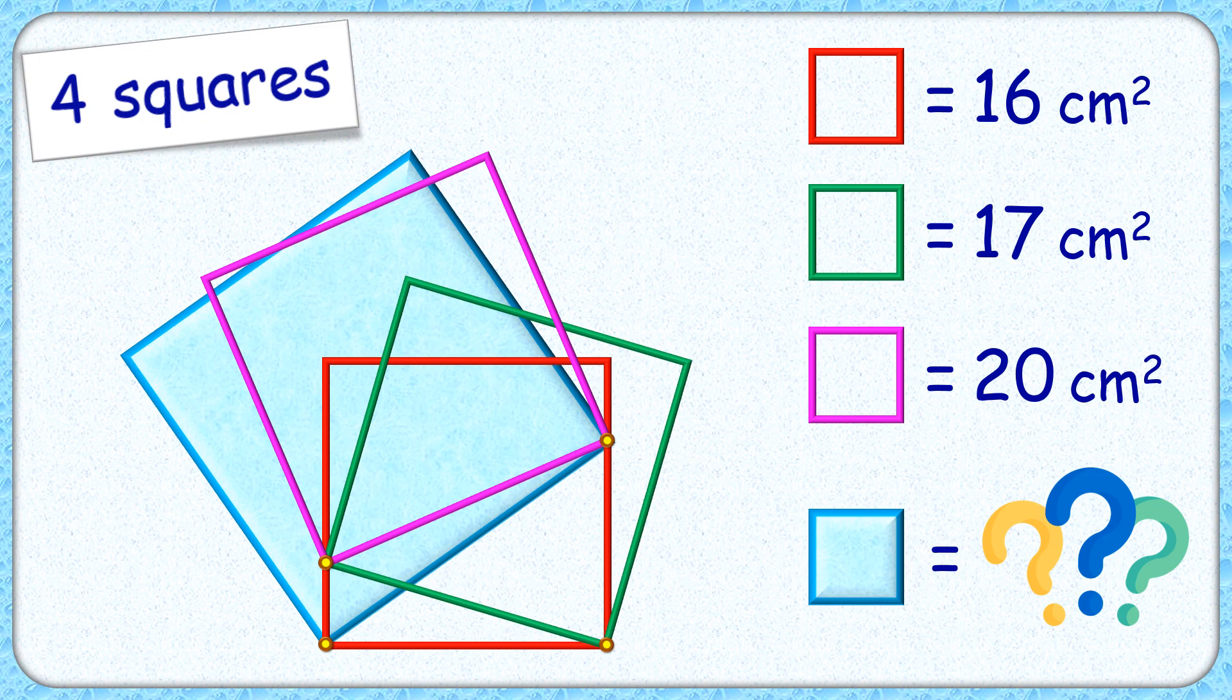Welcome everyone. This interesting question given are 4 squares which are arranged as shown in the figure. The area of this smallest square, the red square, is 16 cm². The green square is 17 cm² and the pink square is 20 cm².